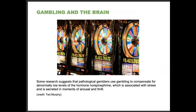Due to Skinner's work around reinforcement, many psychologists began to study gambling in the brain. Some research suggests that pathological gamblers use gambling to compensate for abnormally low levels of the hormone norepinephrine, which is associated with stress and secreted in moments of arousal and thrill. Their brain is learning how to get more norepinephrine by using gambling. Unfortunately, gambling is on a variable ratio schedule, meaning they don't know every time that they're going to win each time they play.